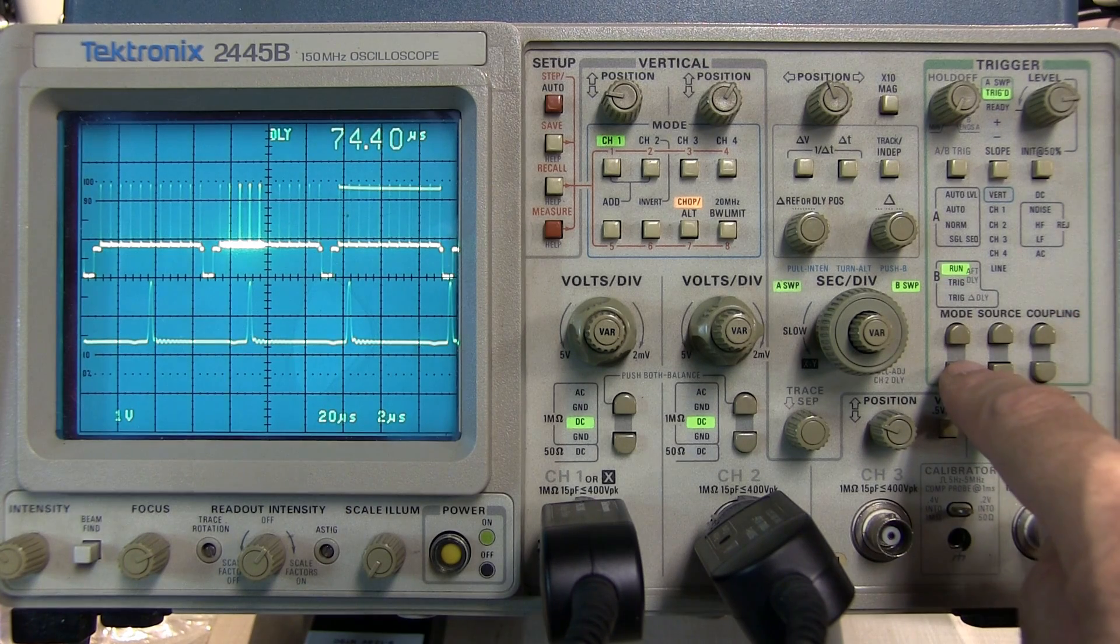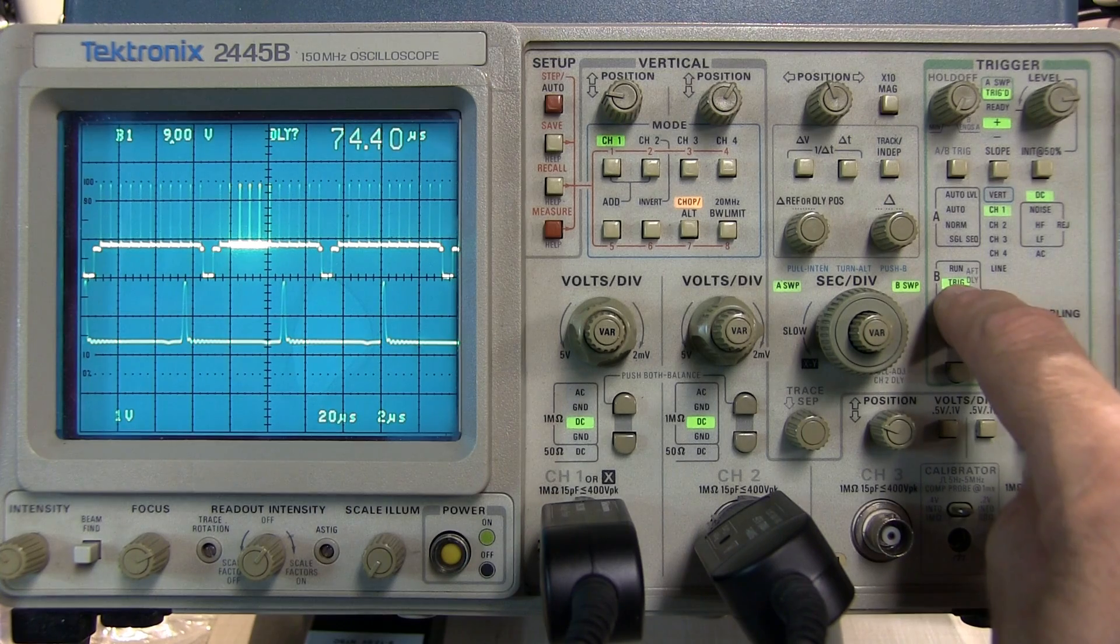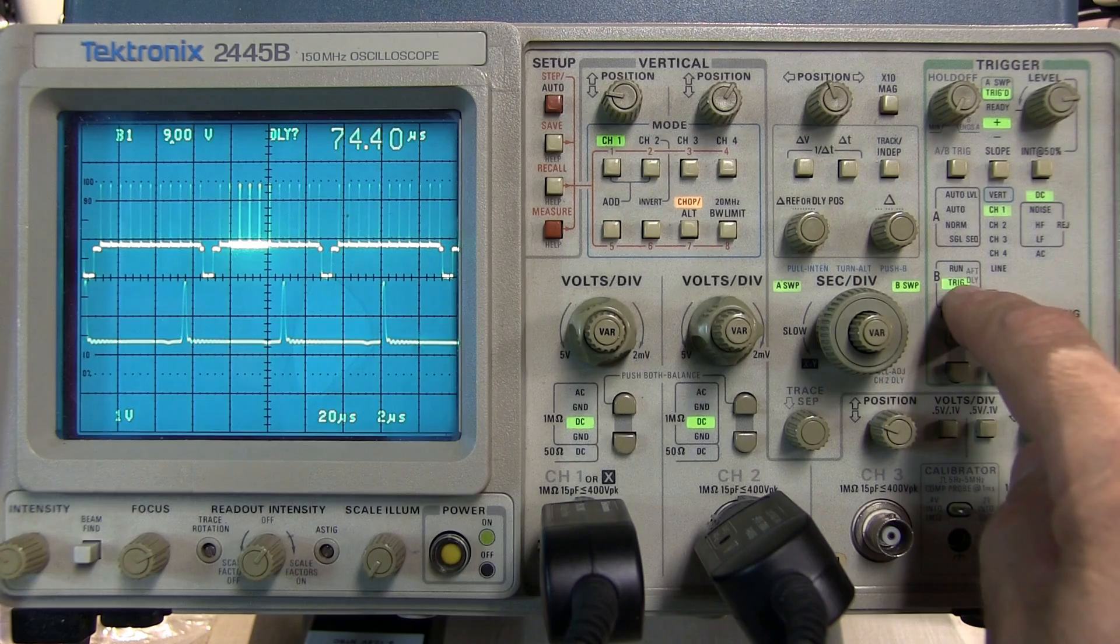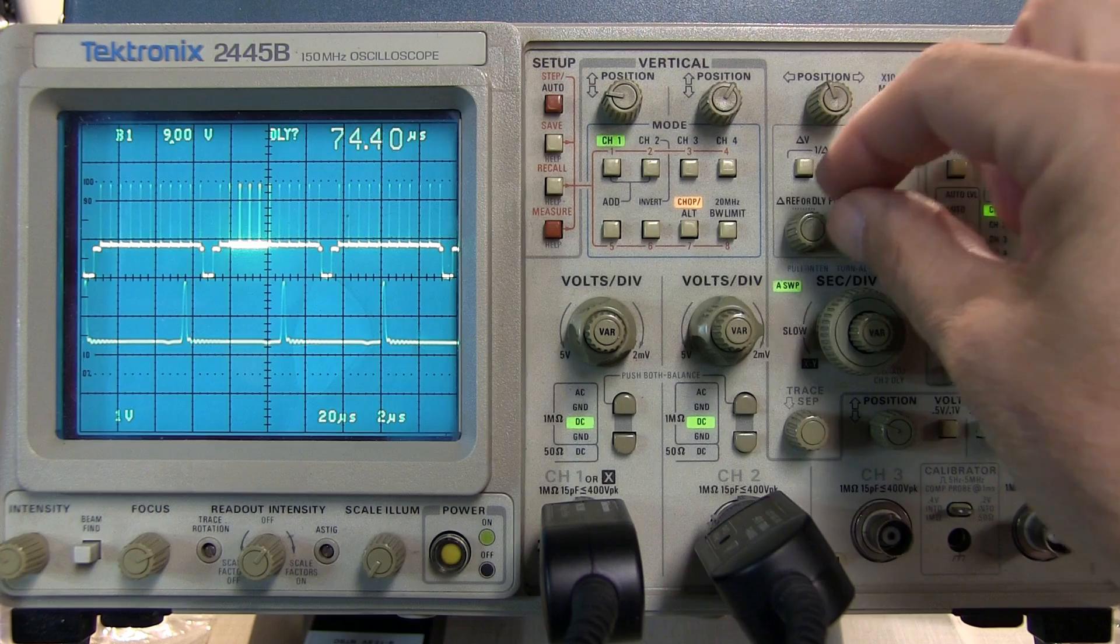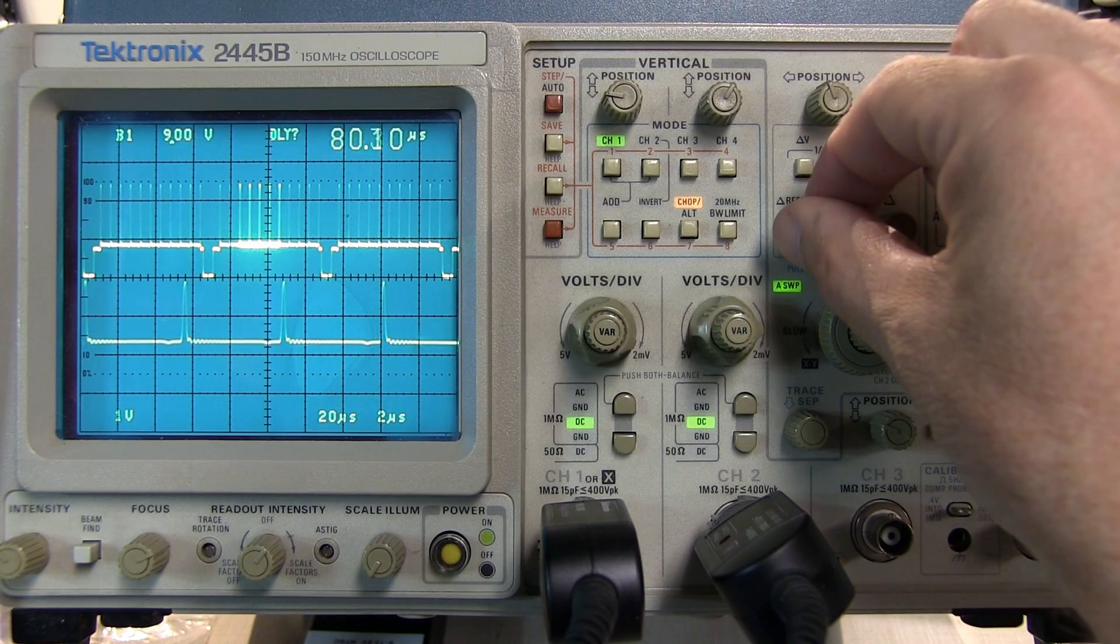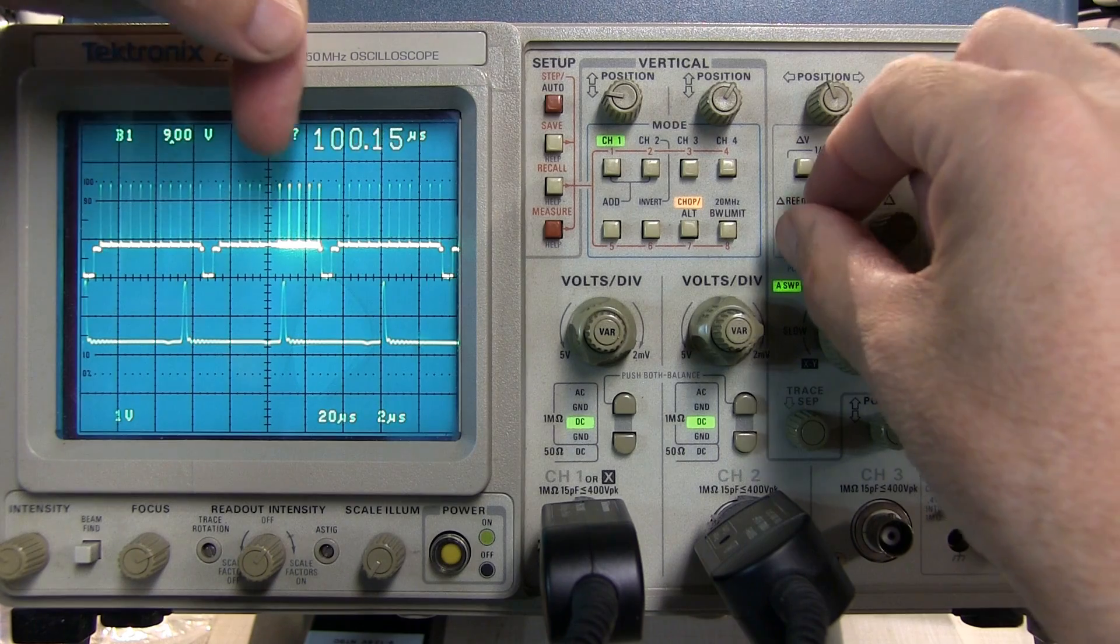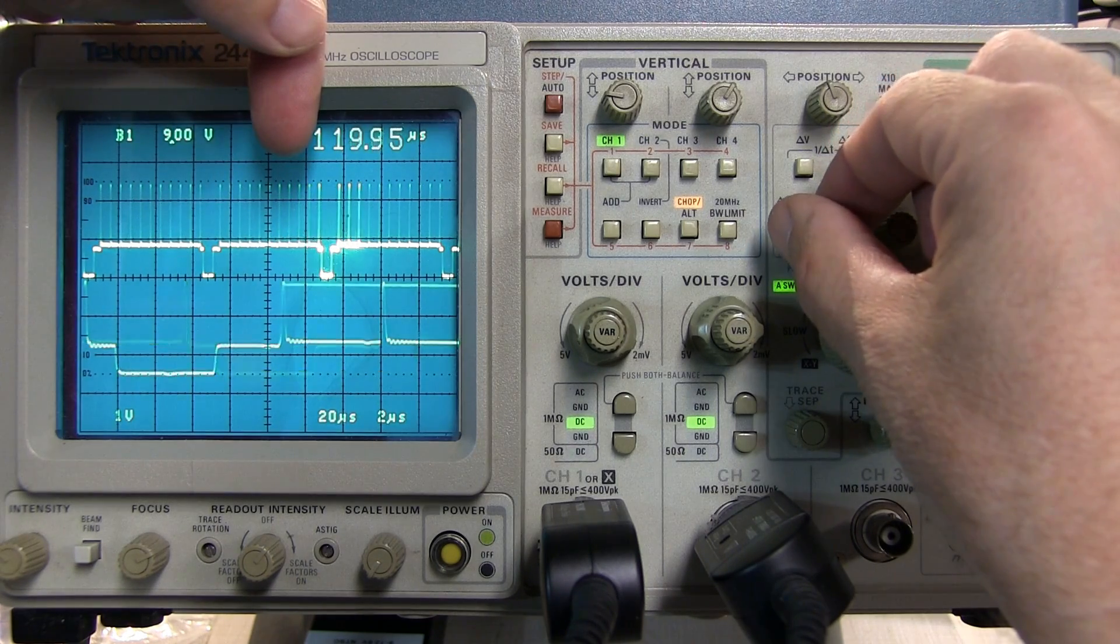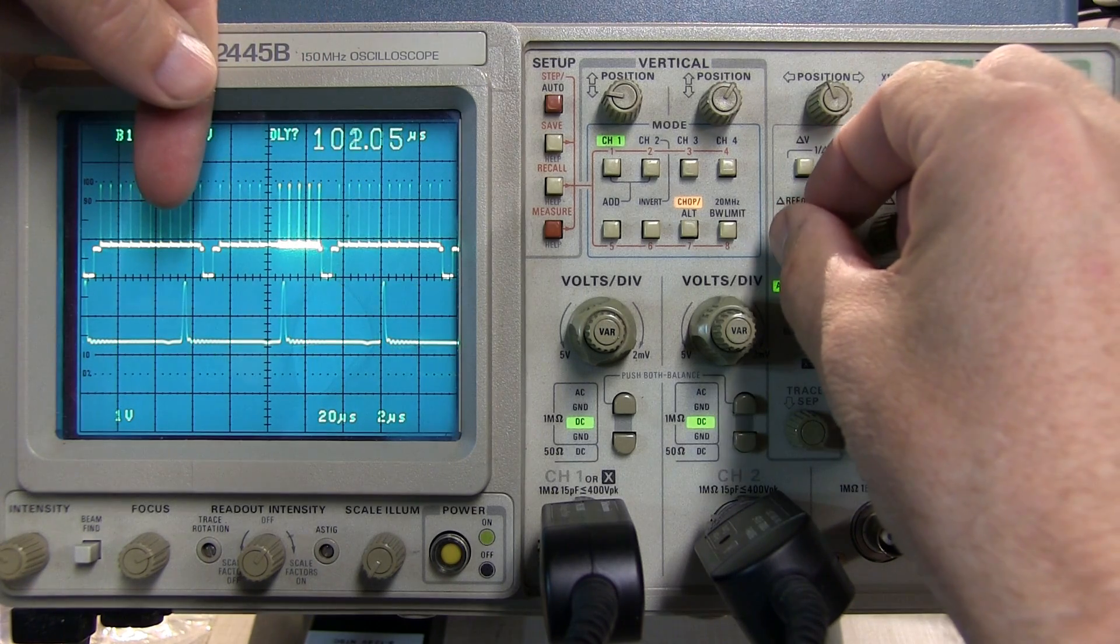Now what that will do is after the delay that we've dialed in it will then go to run the B time base but wait until the B is satisfied by a trigger. Now you'll notice the difference as I move this across here, you see that it's jumping from one of these little peaks to another and it's doing that because it's waiting until the B time base gets triggered before it displays a waveform.